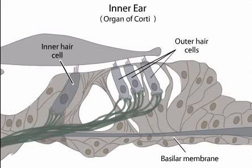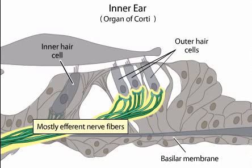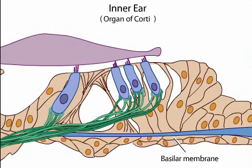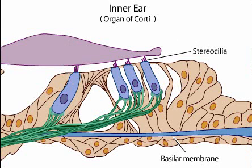The outer hair cells receive efferent inputs from the brain that help sharpen the frequency resolving power of the cochlea. From the upper end of each hair cell protrude relatively stiff, tiny hairs called stereocilia. Each hair cell has 50 to 200 stereocilia. The heights of the stereocilia increase progressively across the hair cell, so the tops approximate an inclined plane. Atop the organ of Corti is the tectorial membrane; the stereocilia of the outer hair cells extend into indentations in the bottom of the tectorial membrane.